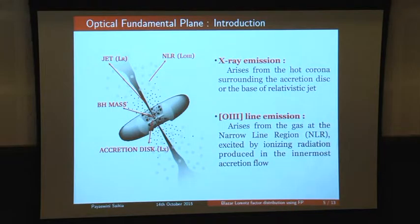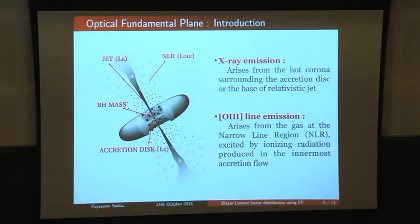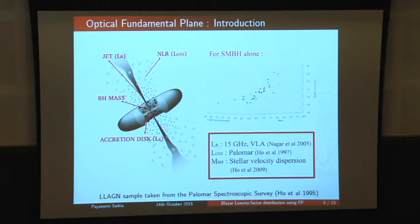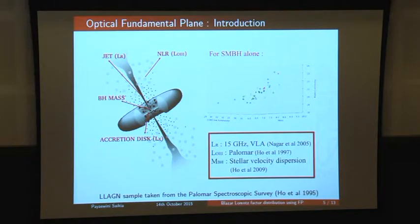Because OIII lines come from the narrow-line region, which is far from the black hole, not as beamed, and observable from ground-based observations, we use a sample of low-luminosity AGN from the Palomar spectroscopic survey. Here I'm showing a 3D snapshot of radio luminosity, mass, and OIII line luminosity. We do see a kind of plane relation from the low-luminosity AGN. The radio luminosity is at 15 GHz and the OIII lines are taken from the Palomar survey.